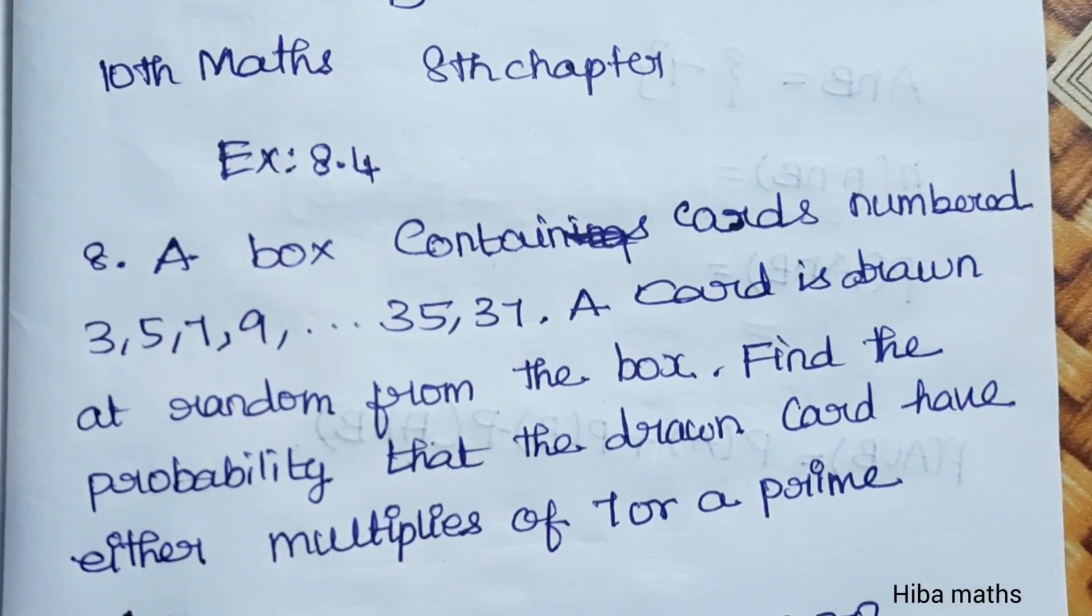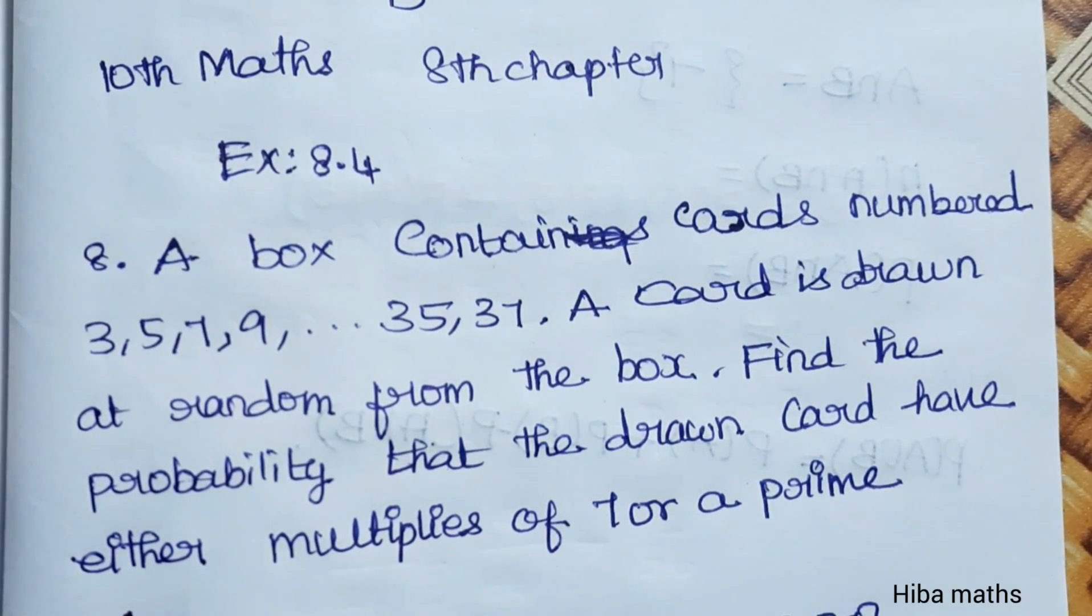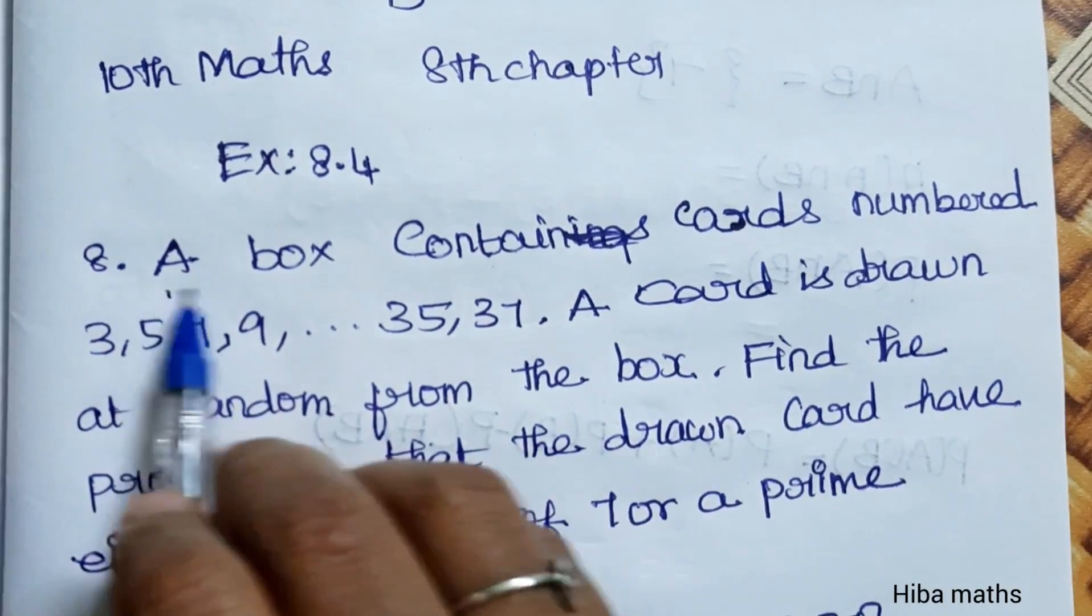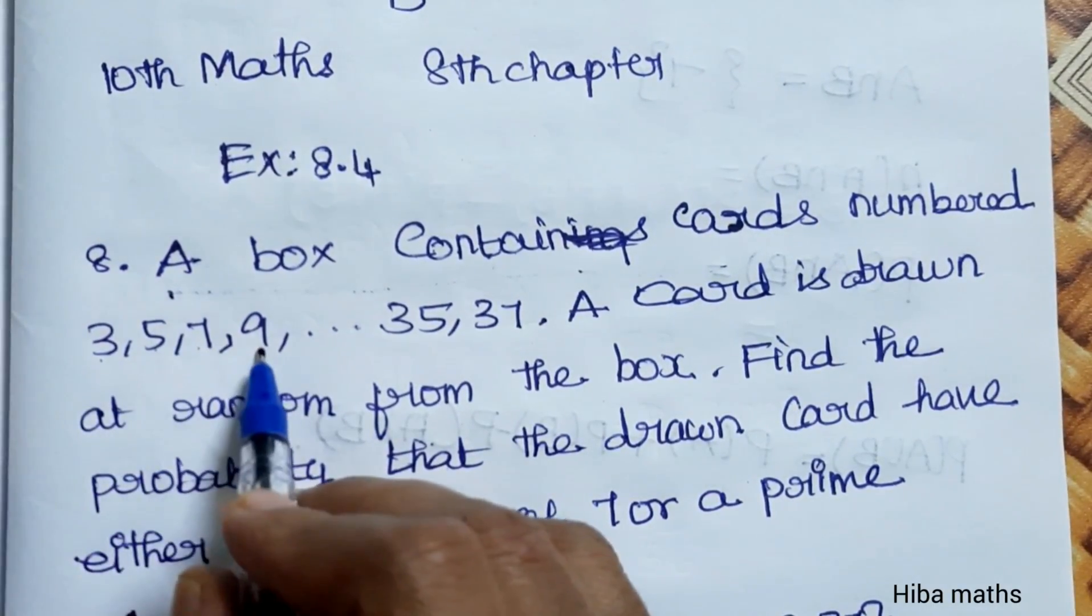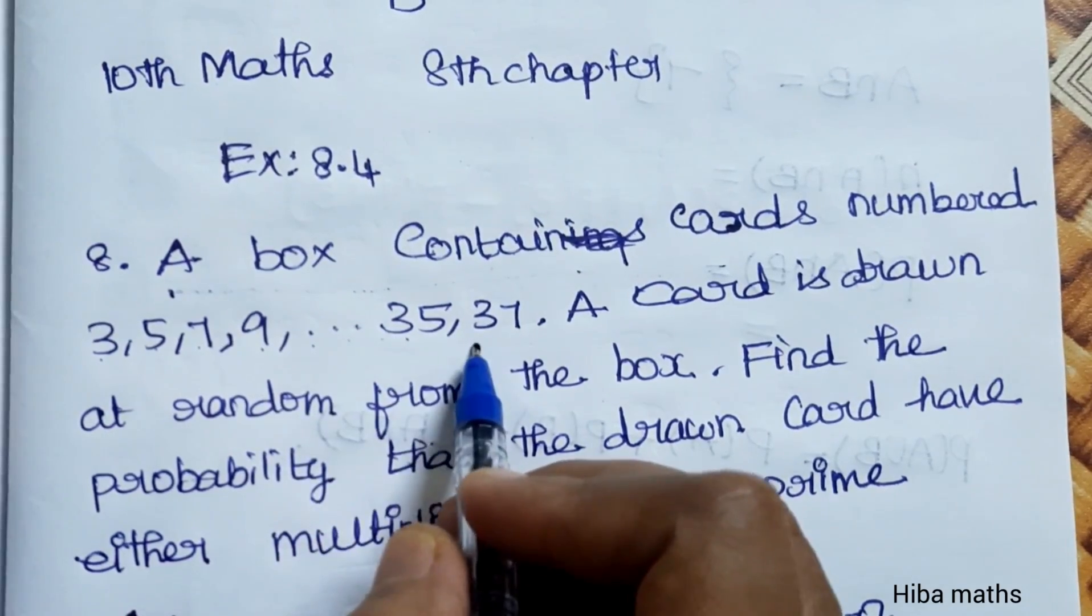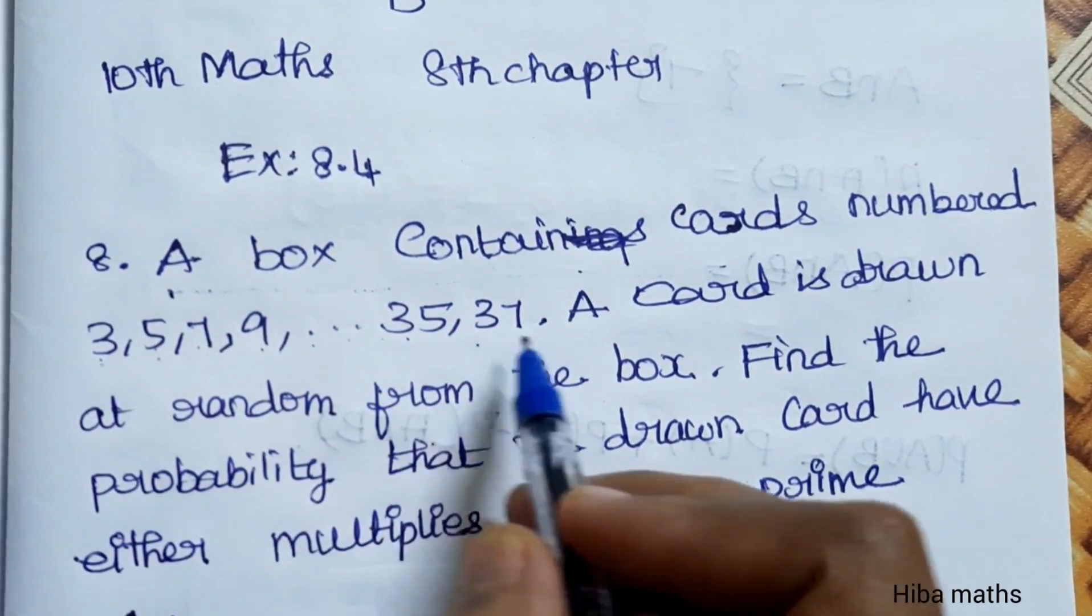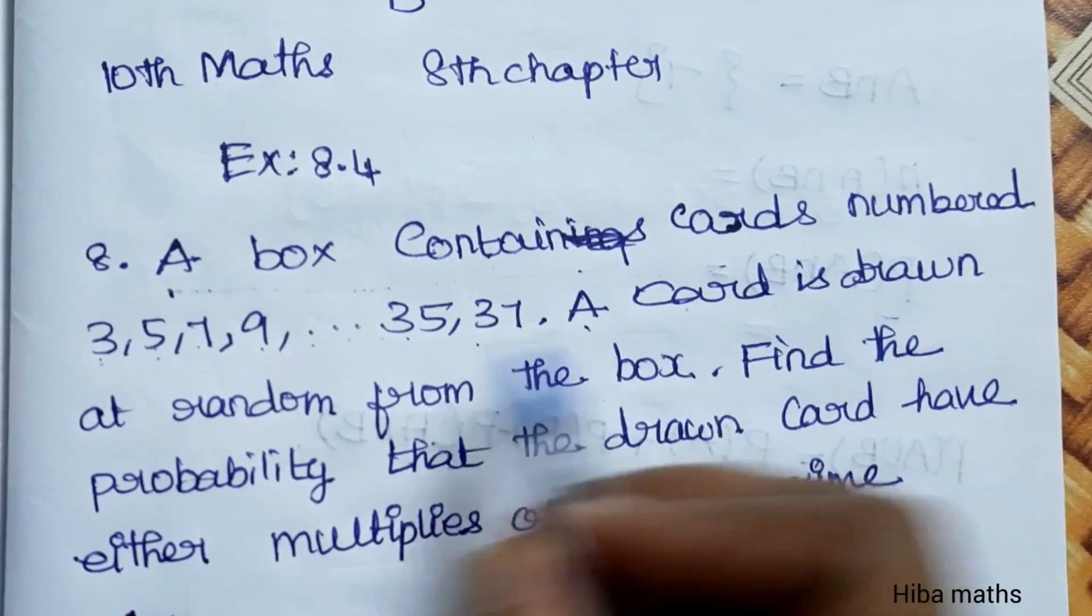Hello students, welcome to Hiba Maths. 10th standard maths, chapter 8, exercise 8.4, the 8th question. A box contains cards numbered 3, 5, 7, 9 up to 35, 37. That is odd numbers starting from 3. A card is drawn at random from the box.